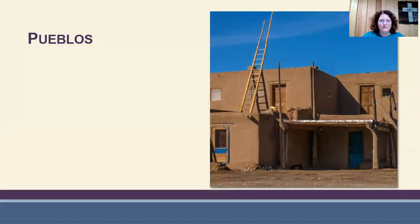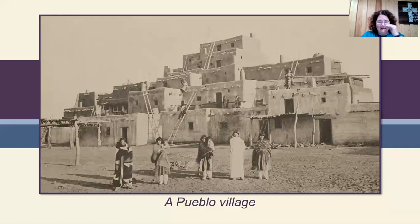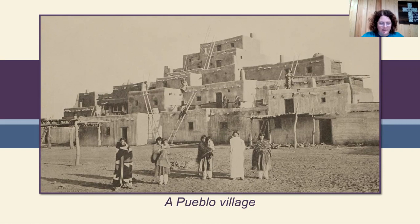First we're going to look at the Pueblos. The Pueblos was the name for the Indians that lived in the southwest region of North America. Pueblo means towns. They lived in small villages composed of several family groups or clans. They made their homes out of adobe, which is a mixture of sand and straw to make dried clay. Some of them actually built their homes by carving into the sides of rocks and cliffs. They were often called cliff dwellers for that reason.